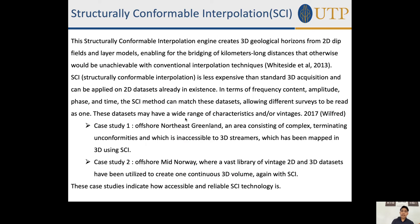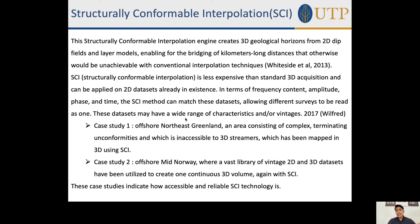The second technique is Structurally Conformable Interpolation (SCI). SCI creates 3D geological horizons from 2D depth-field and layer models, enabling bridging of kilometre-long distances that would otherwise be unachievable with conventional interpolation. SCI is generally less expensive than 3D acquisition and can be applied to existing 2D data sets. In terms of frequency content, amplitude, phase, and time, the SCI method can match data sets, allowing different surveys to be read as one, even when those data sets have a wide range of characteristics or vintage.